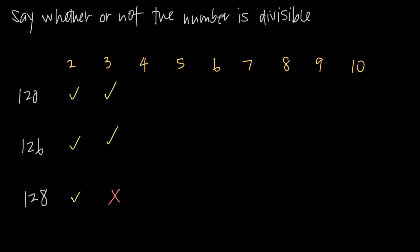For divisibility by 4, we look at the last two digits of the number and see if that number is divisible by 4. For 120, the last two digits are 20, and since 4 goes into 20 five times, 120 is divisible by 4. For 126, the last two digits are 26, and 4 doesn't go evenly into 26, so 126 is not divisible by 4. For 128, the last two digits are 28, and 4 goes into 28 seven times, so 128 is divisible by 4.